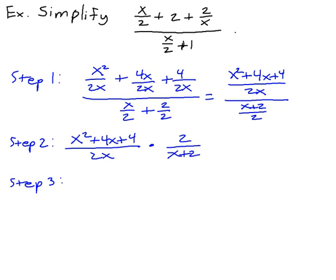Step 3 is simplifying all of this. Remember, when you're multiplying rational expressions, first factor your numerators and denominators. The numerator of the first one factors to x plus 2 times x plus 2. The denominator stays 2x. The second term cannot be factored, so it would be 2 over x plus 2.